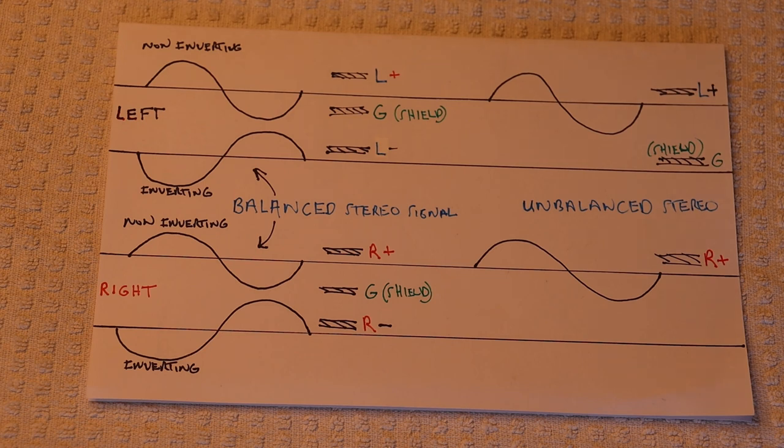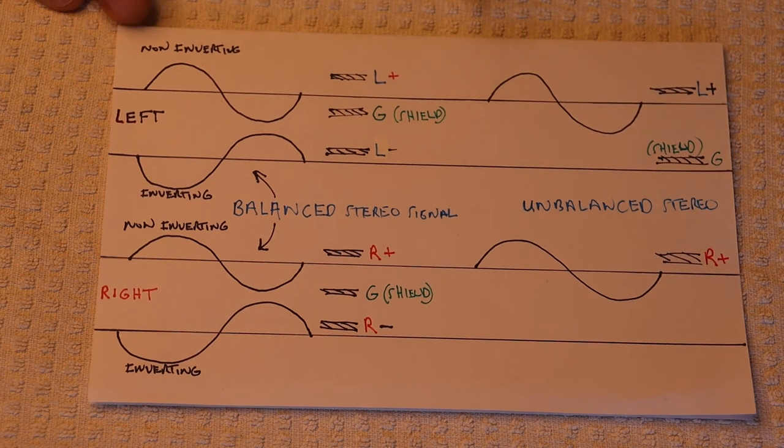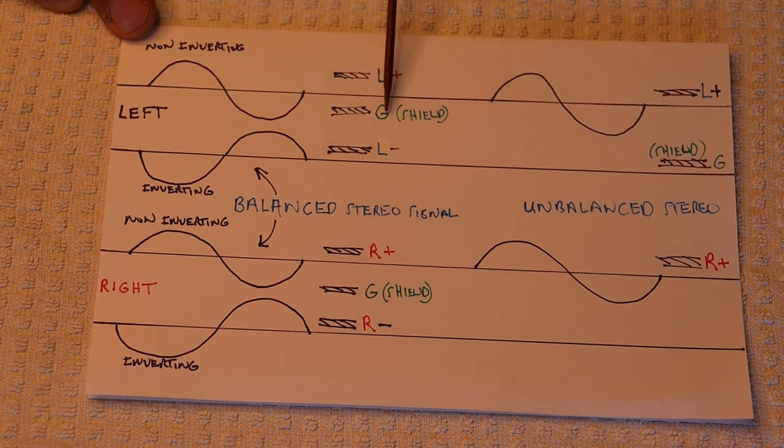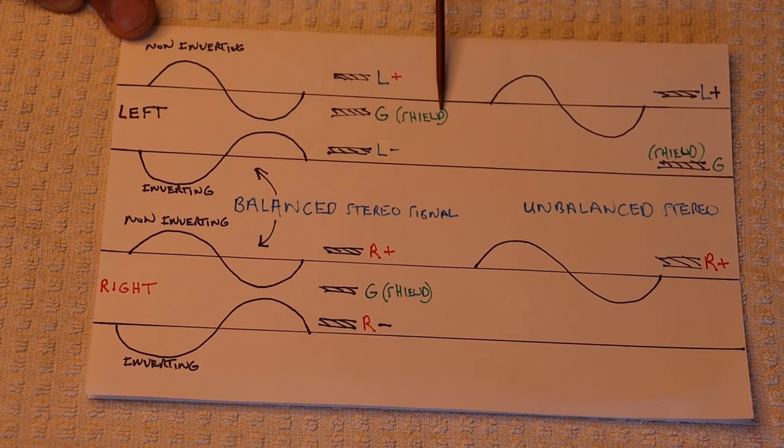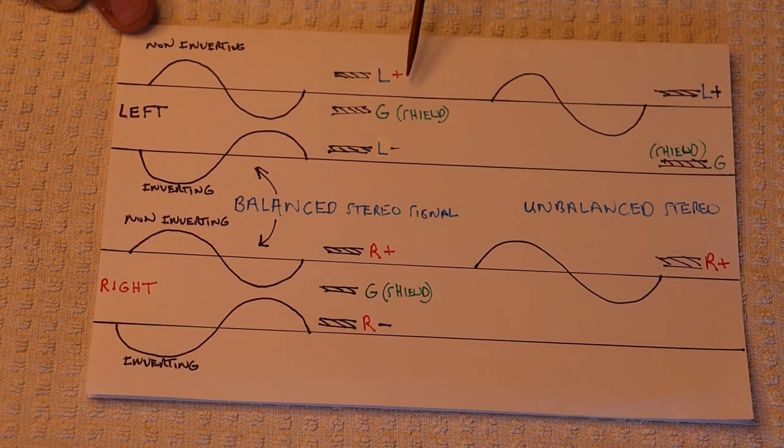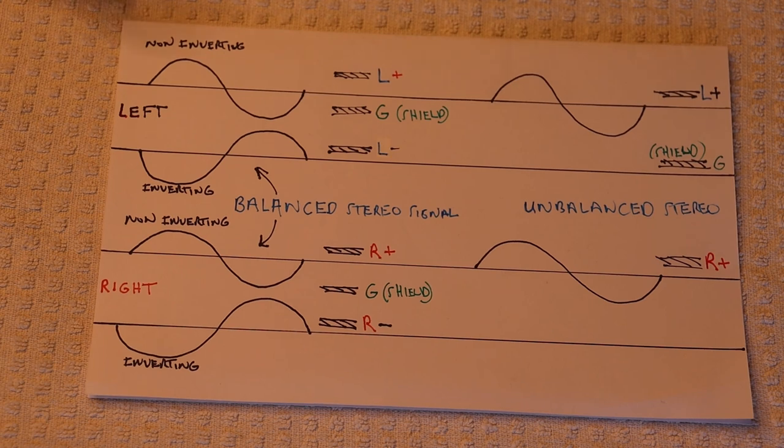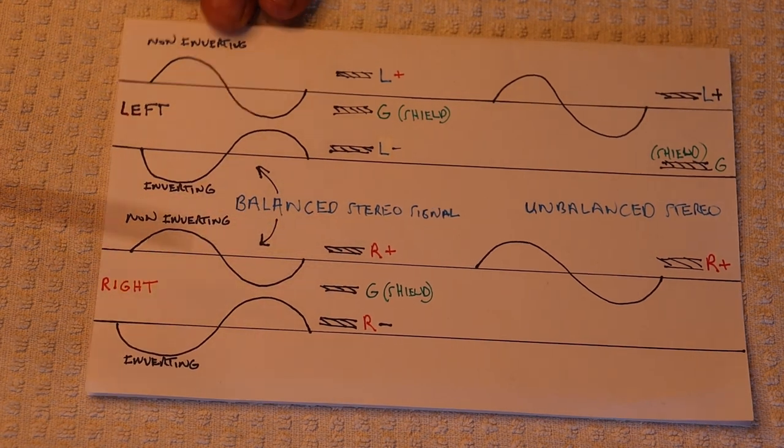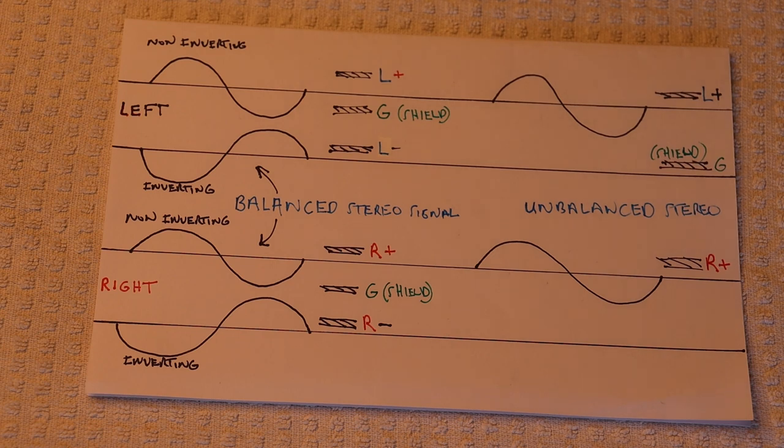So what does that actually look like as a wire though? Well, you'd have a left positive, you'd have a ground, which is also a shield. I should say it differently. I should say there's a shield that also works as the ground return path and a left negative. And the same thing exactly for the right channel. Okay. I think everybody's caught up with that.